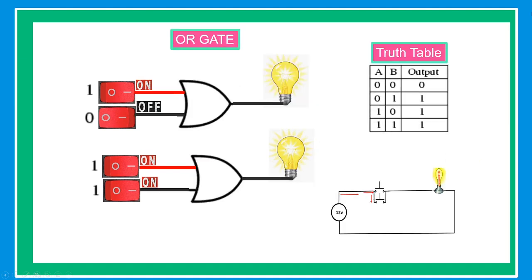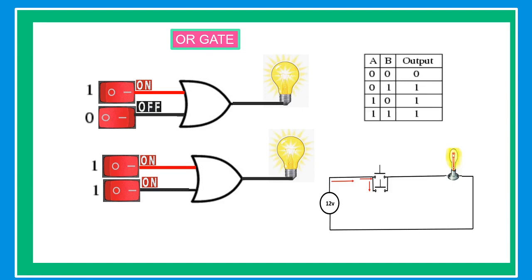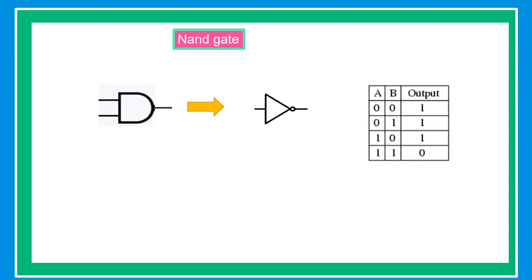OR gate. The OR gate gives an output of 1 if either of the two inputs is 1. It gives 0 otherwise.